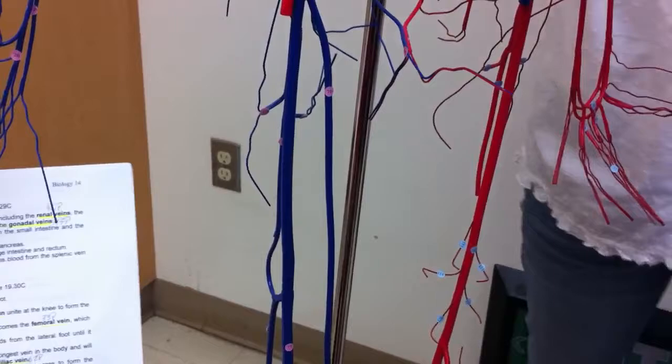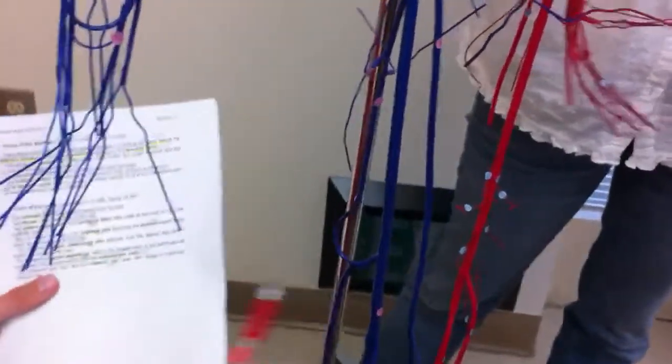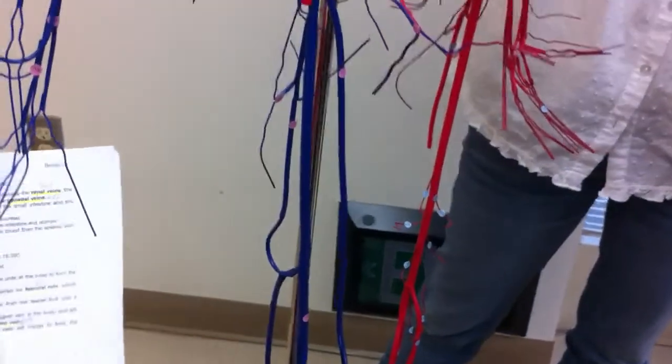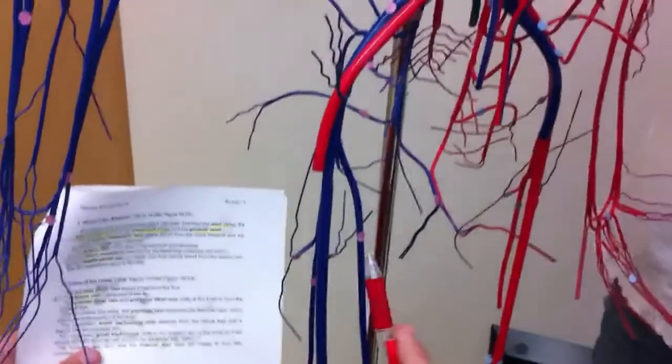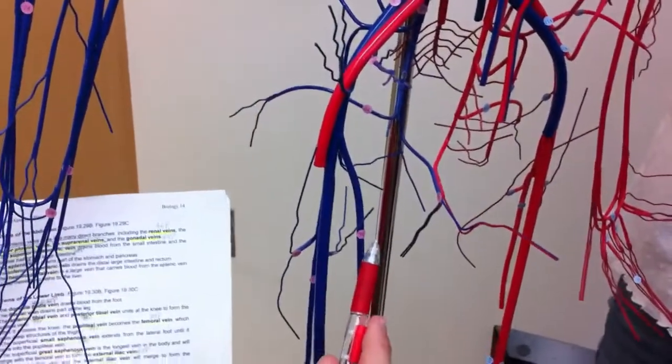The small saphenous vein is behind, and it's right here, it's number 74. Next we got the great saphenous vein, which is number 70, that's right there.